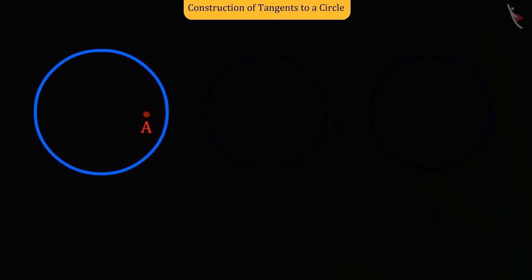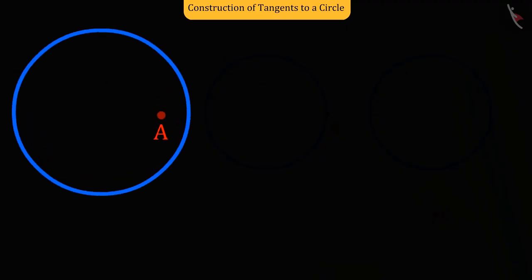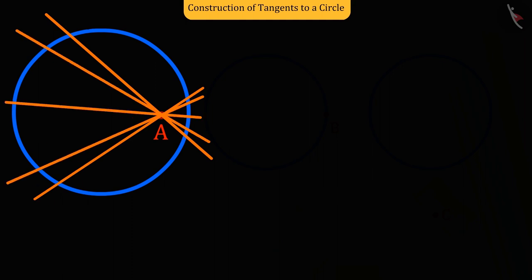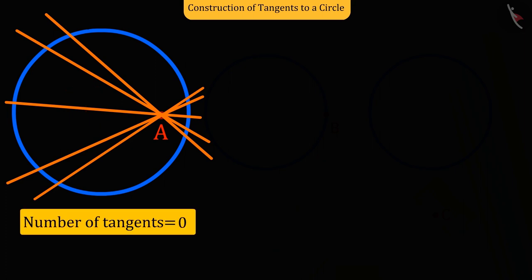Here in this case, the point is inside the circle, and as we have seen in the previous lesson, the tangent line cannot be drawn from a point inside the circle. So the number of tangents here will be zero.